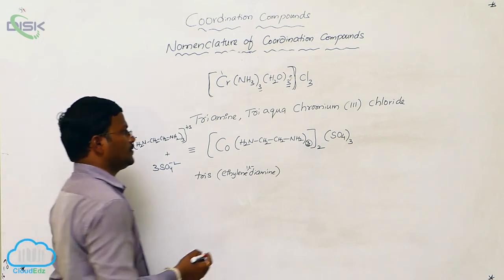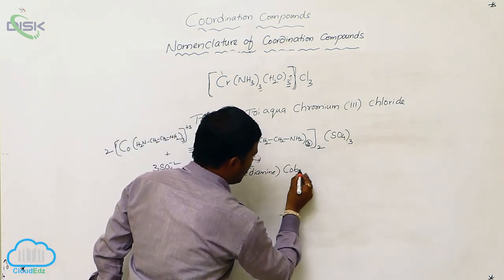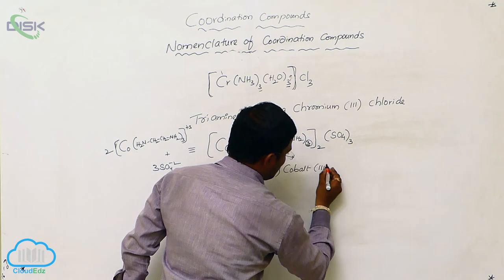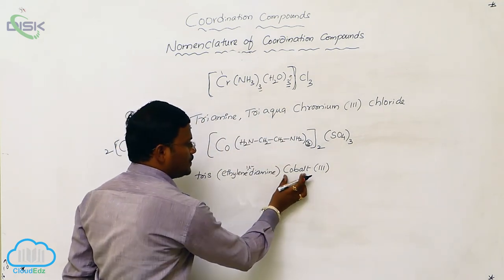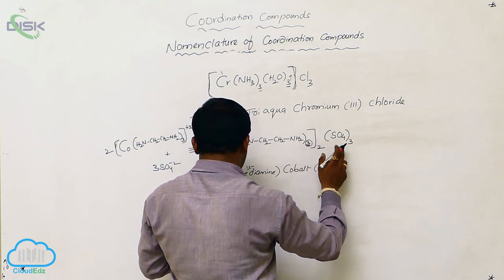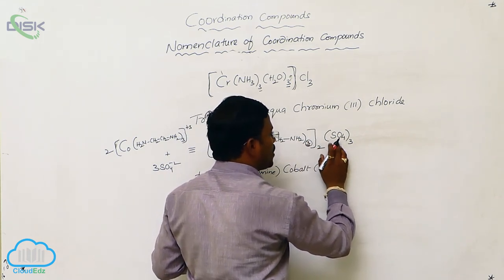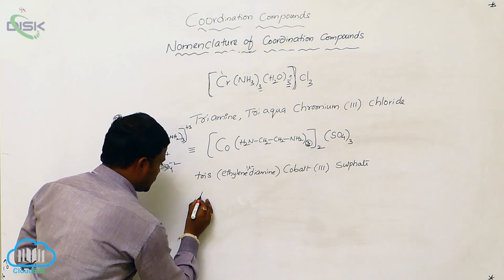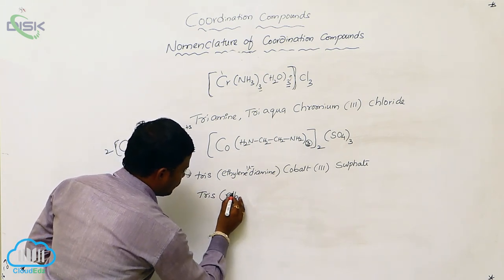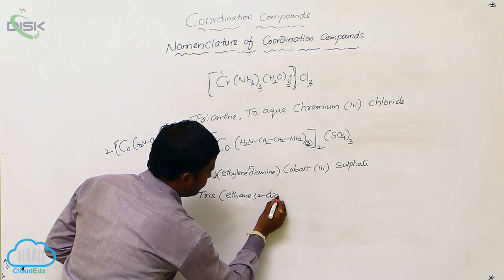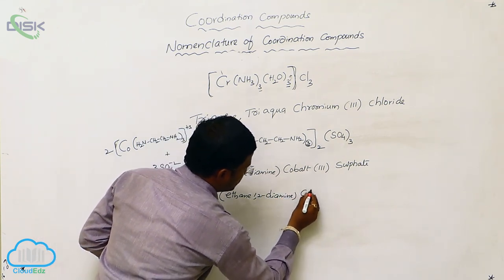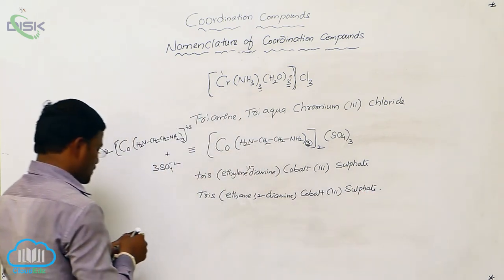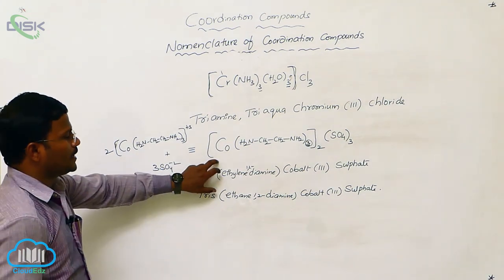The metal atom is cobalt, and its oxidation state in the given coordination compound is +3, so we write Roman numeral III in brackets after the metal atom name. Outside the coordination sphere, the counter ions are sulfates. Combinedly, the name is tris(ethane-1,2-diamine)cobalt(III) sulfate, or tris(ethylenediamine)cobalt(III) sulfate. This is the name provided for the given coordination compound.